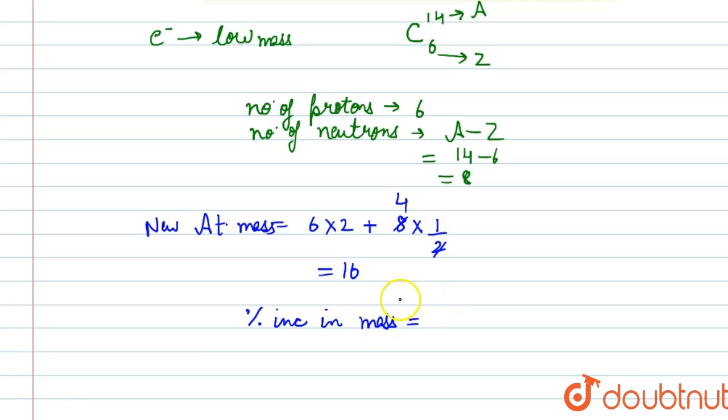Percentage increase in mass is the change, that is here 16 minus 14 divided by initial into 100. Now after solving this we will get answer as 14.28 percent, which is 14.28 percent more than actual.